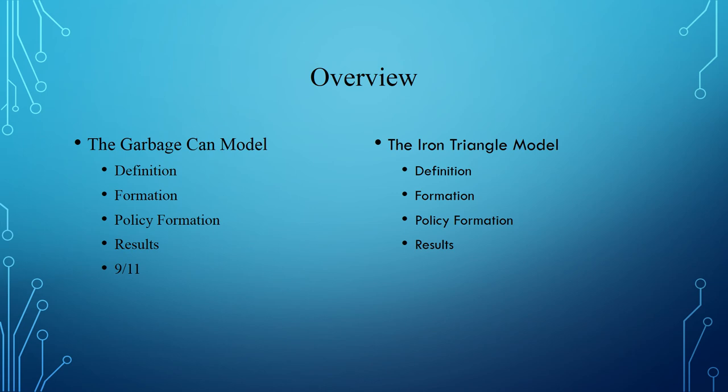The discussion on the garbage can model includes its definition, how it is formed, how policies are formed under this model, the policies that result from it, and how the garbage can model relates to the government's response to the 9-11 attacks. Following that is the iron triangle model, covering its definition, who forms it, how policies are created, and the results of this model.